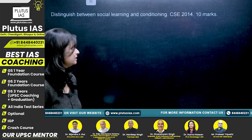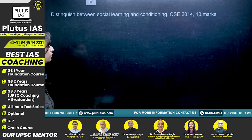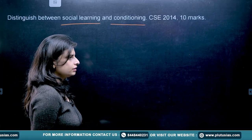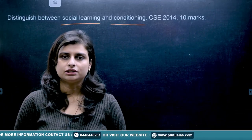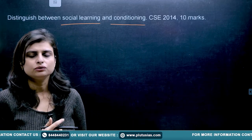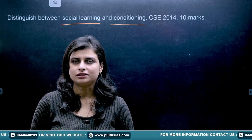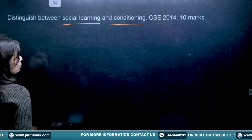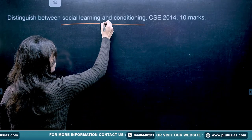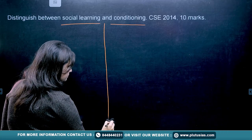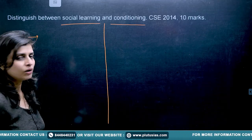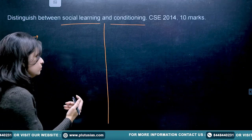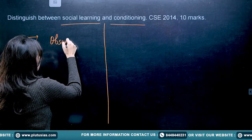The first question says: distinguish between social learning and conditioning. This is very important because you need to have a very clear concept with respect to what is learning and what is conditioning. Once you have this clear concept, you are easily able to write the answers. What is learning? Learning is something you observe and then learn — so through observation, learning is possible.